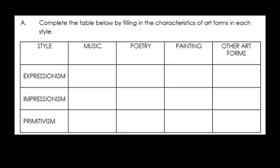Directions: Complete the table by filling in the characteristics of art forms in each style — Expressionism, Impressionism, and Primitivism.